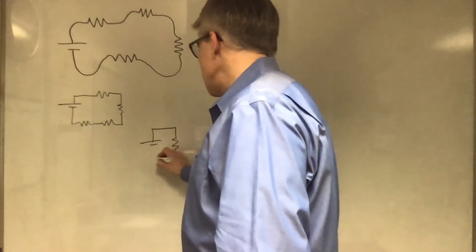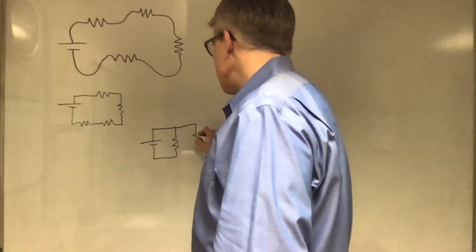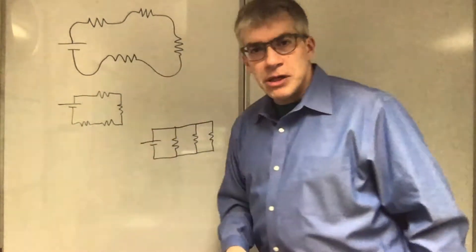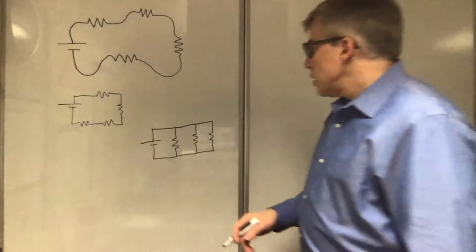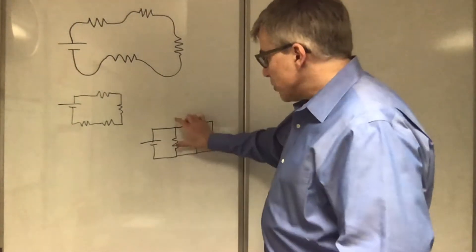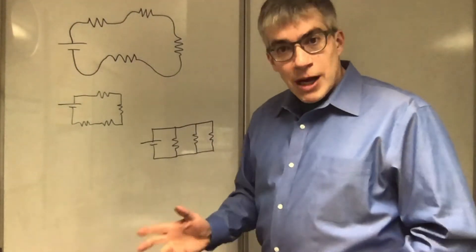Now, this is the classic picture of things in parallel. See, that would be three resistors in parallel with the battery. How do I know they're in parallel? They're connected to the same two pieces of wire.